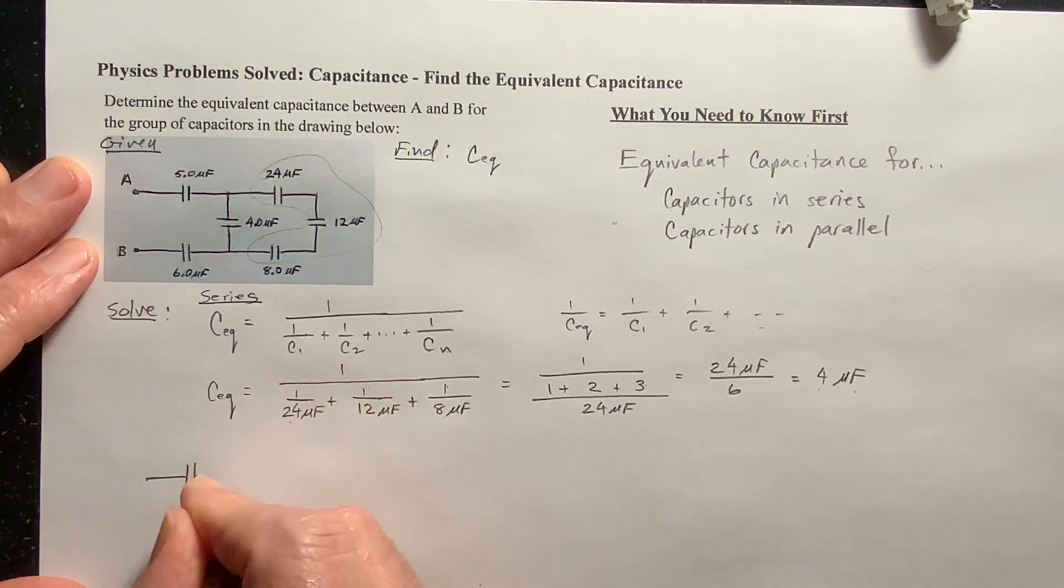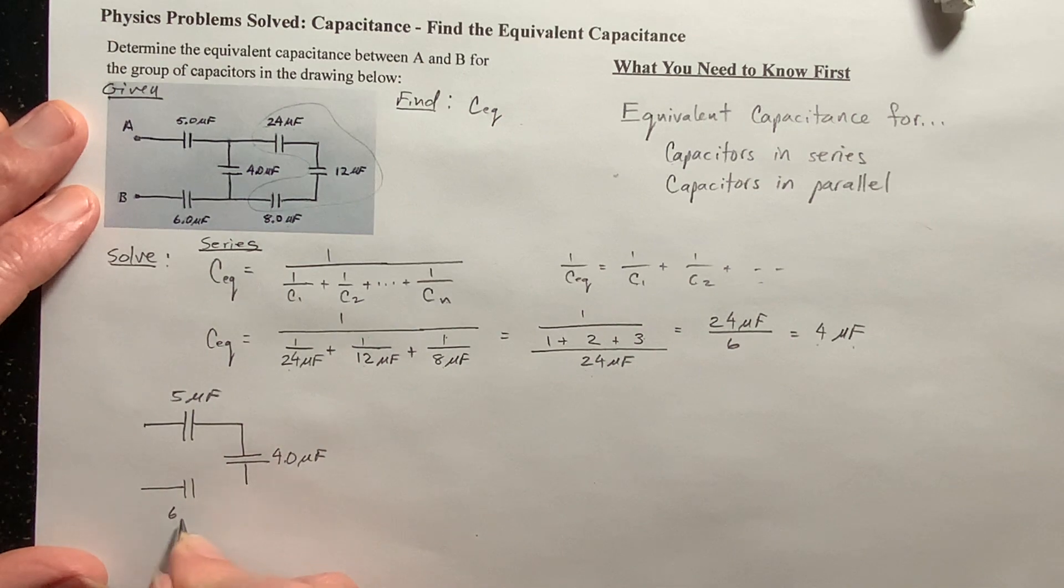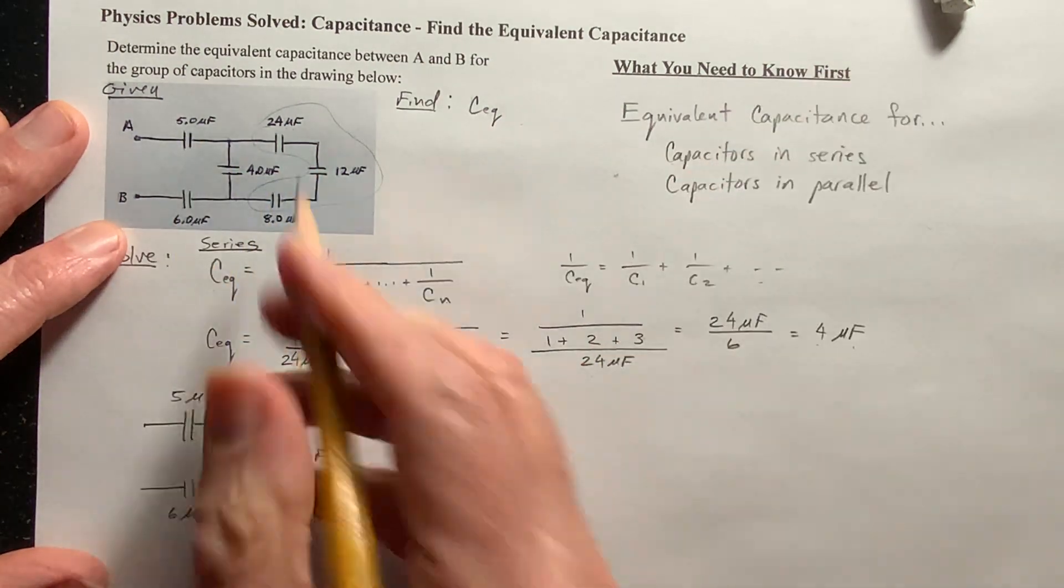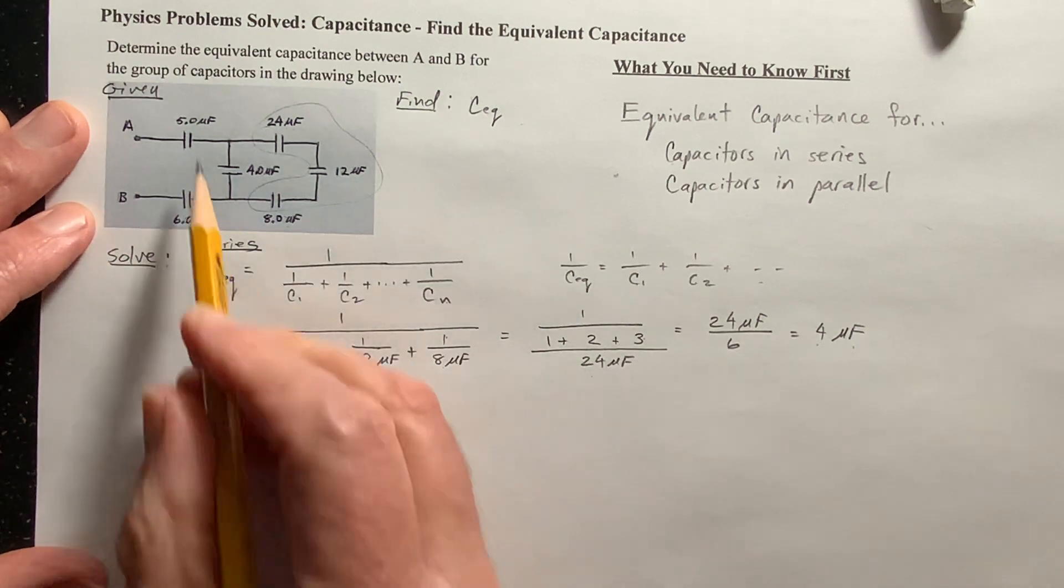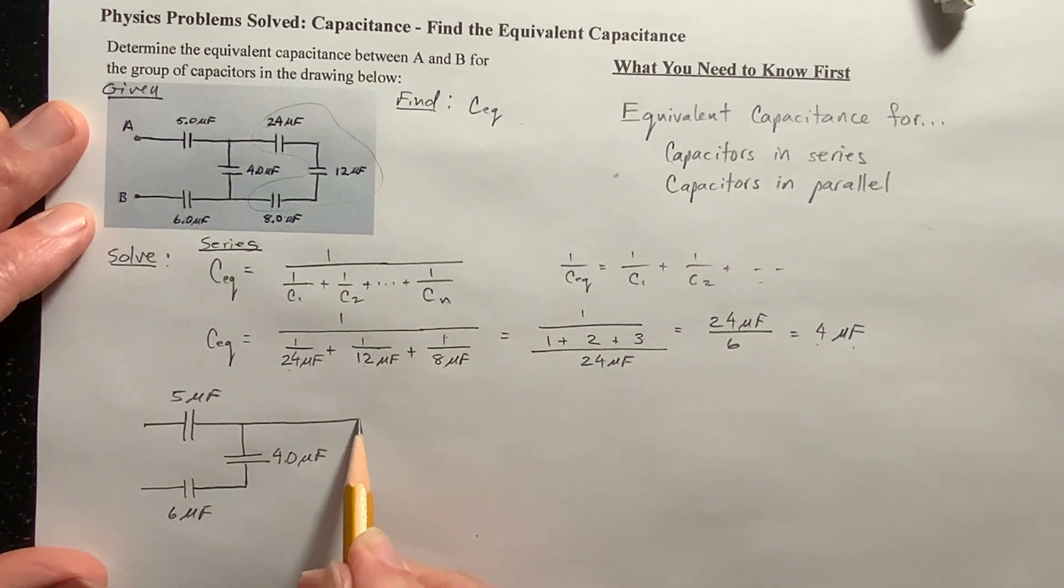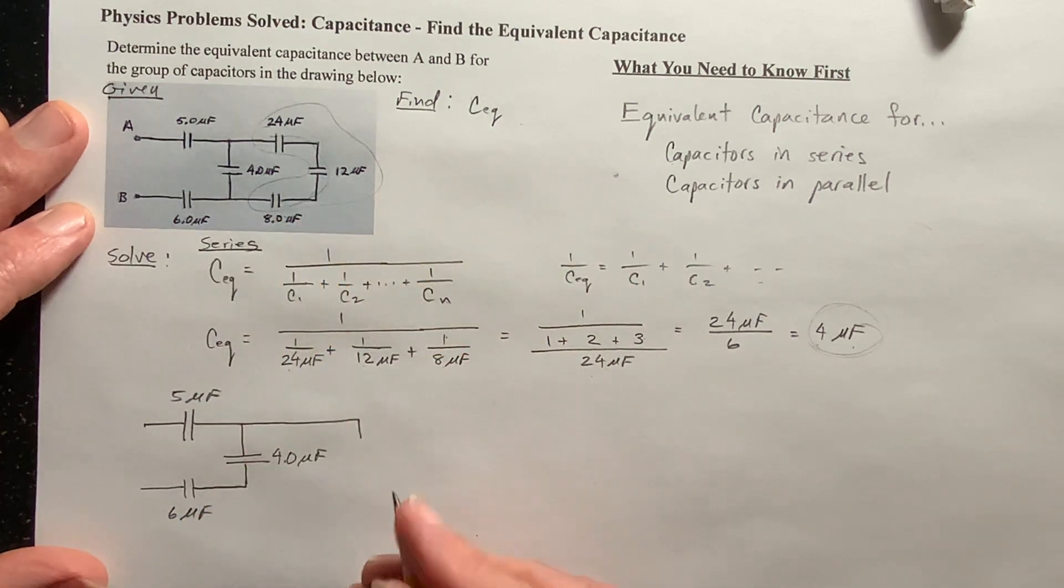So I got, here's my 5 microfarad capacitor, and then this branch is down here to this 4 microfarad capacitor. And then here we have the 6 microfarad capacitor. And I'm dropping the significant, we'll round our answer off to two significant figures, since these all have two. But now, so this is the same as that. But now, I've got one, this 4 microfarads is going to replace all of these. So I've got a 4 microfarad, oh, this is also a 4 microfarad capacitor.